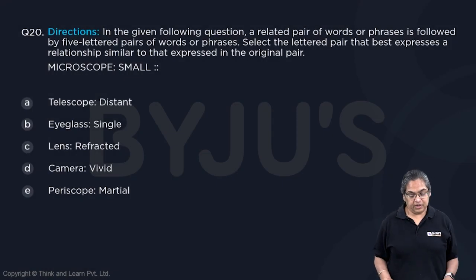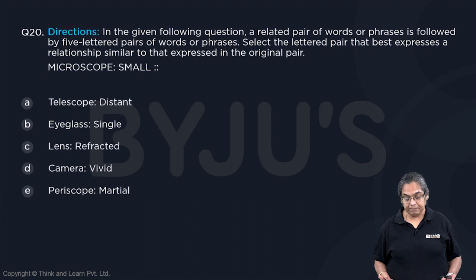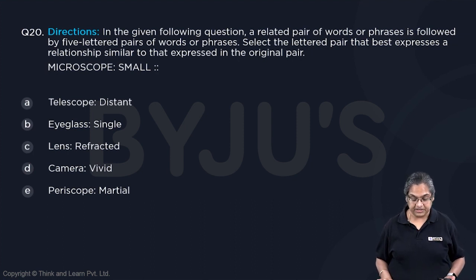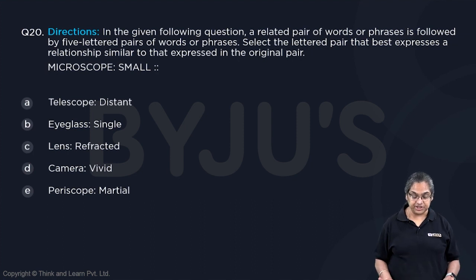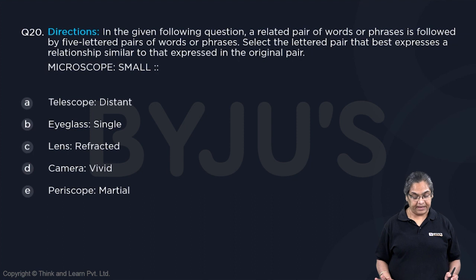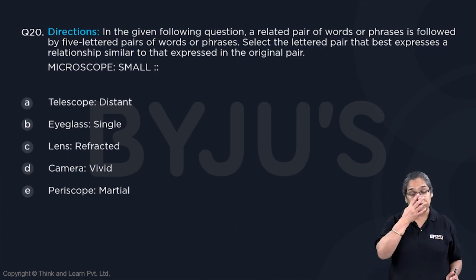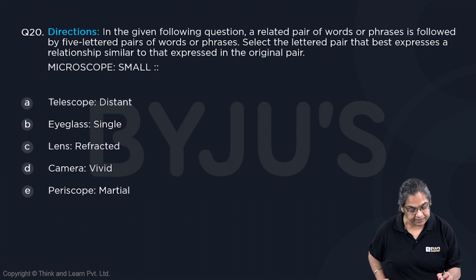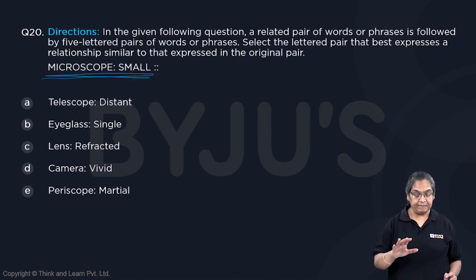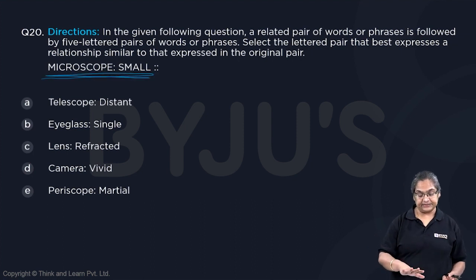Analogy question. In each of the following questions, a related pair of words or phrases is followed by five lettered pairs of words or phrases. Select the lettered pair that best expresses a relationship similar to that expressed in the original pair. In any analogy question, as in this one, we will first determine the relationship of the pair given in capital letters.